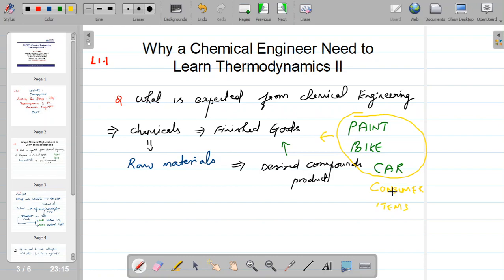These consumer items are what I call as finished goods, but these consumer items are not available by themselves. They are made by a number of chemicals, a number of chemical compounds that goes into this finished goods. And these chemical compounds or desired products are themselves made from some raw materials or feedstock or starting compounds.